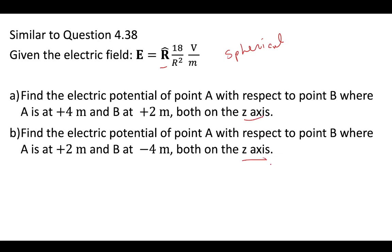The points might be given in cylindrical notation, but we're going to treat these as Cartesian points. In this problem, what we need to do is determine whether we should stay in spherical coordinates or Cartesian coordinates, or how we convert — what are the pitfalls between those two. We also need to apply formulas that allow us to find the potential between point A with respect to point B.